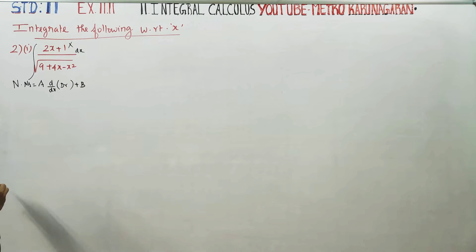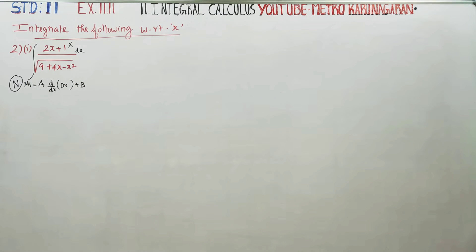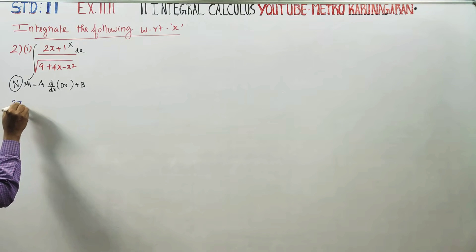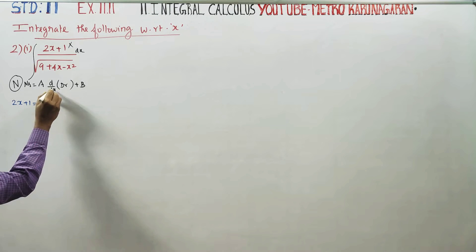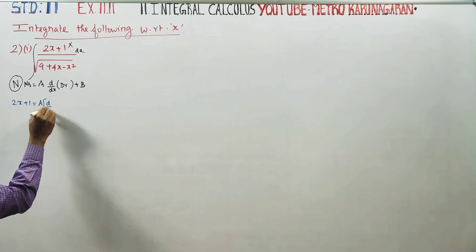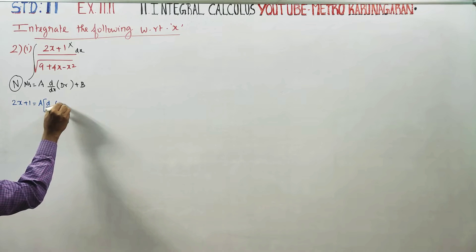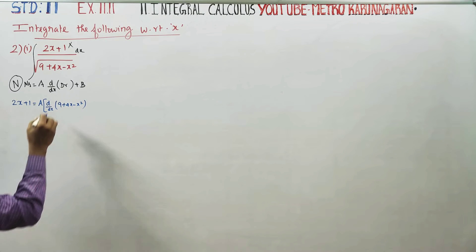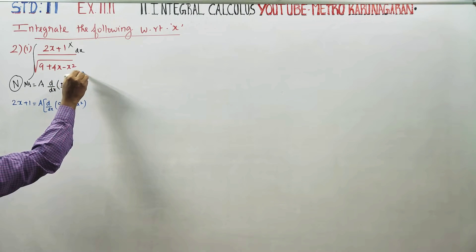Using this technique, our numerator is 2X + 1. Set 2X + 1 = a · d/dx of the denominator (without root). The denominator without root is 9 + 4X − X². We differentiate this: no roots involved here.